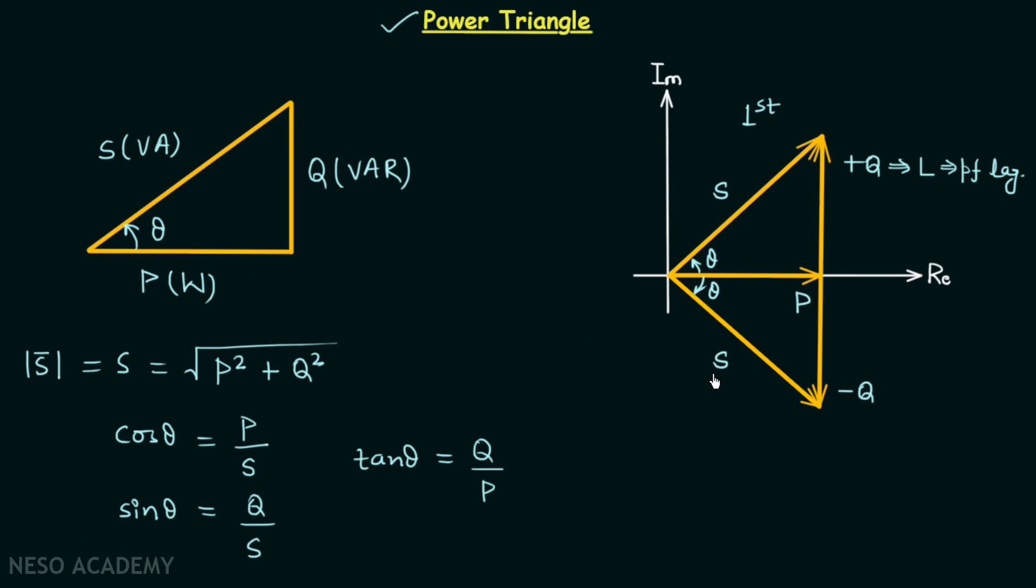And when the apparent power lies in the fourth quadrant then Q will be negative. This means we have capacitive load and the power factor will be leading.